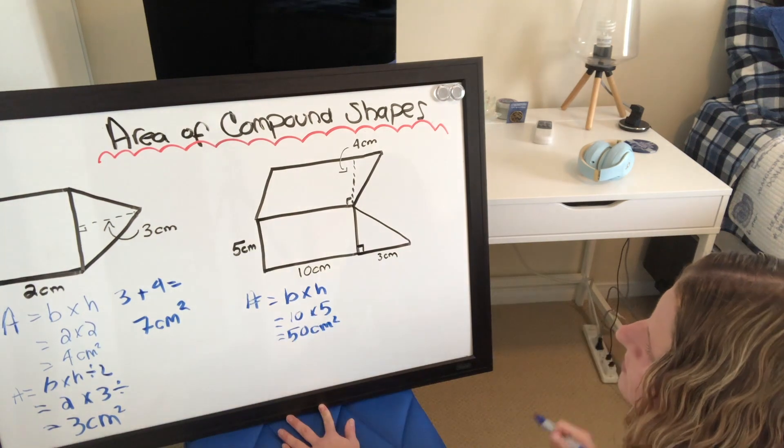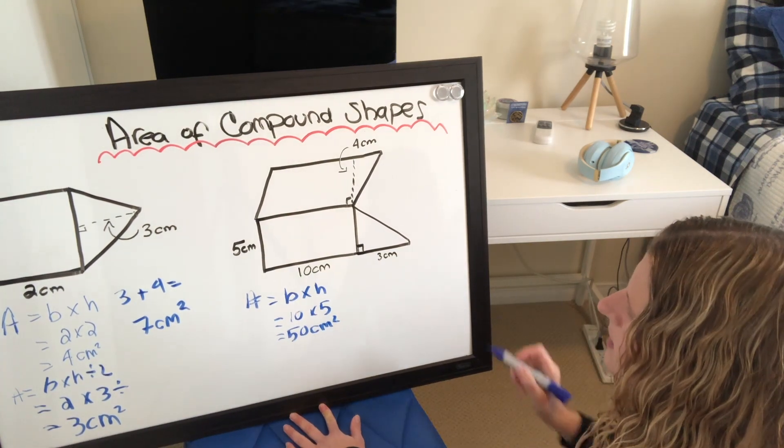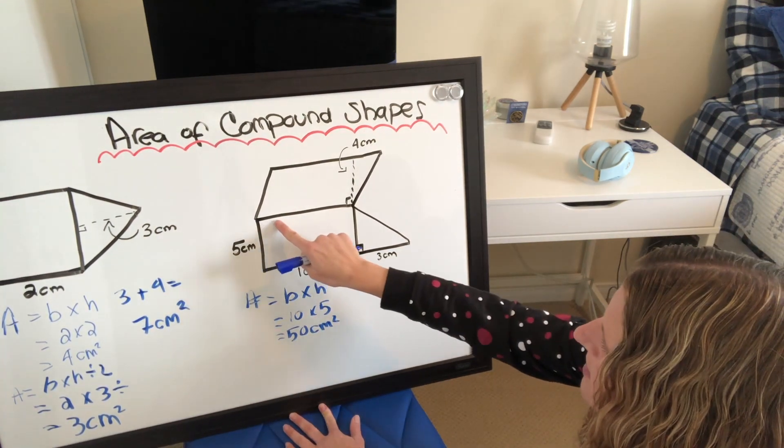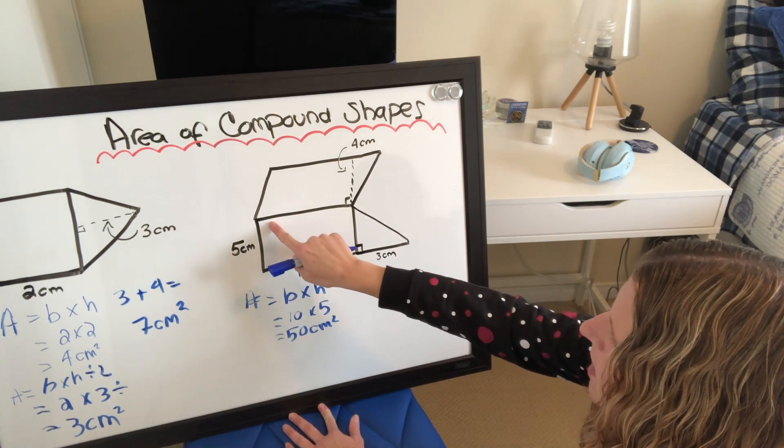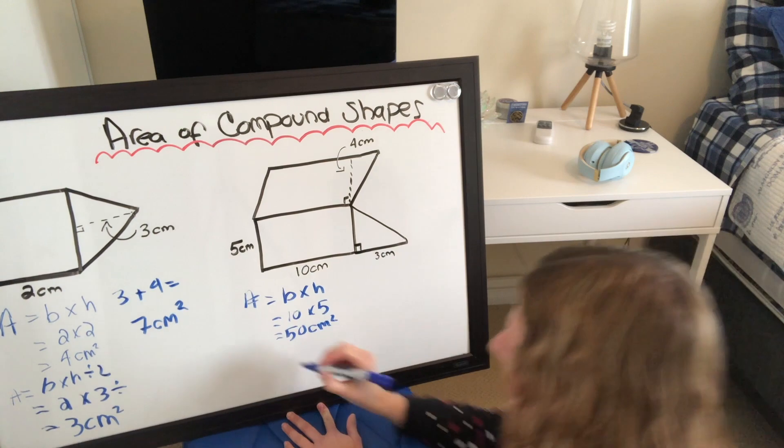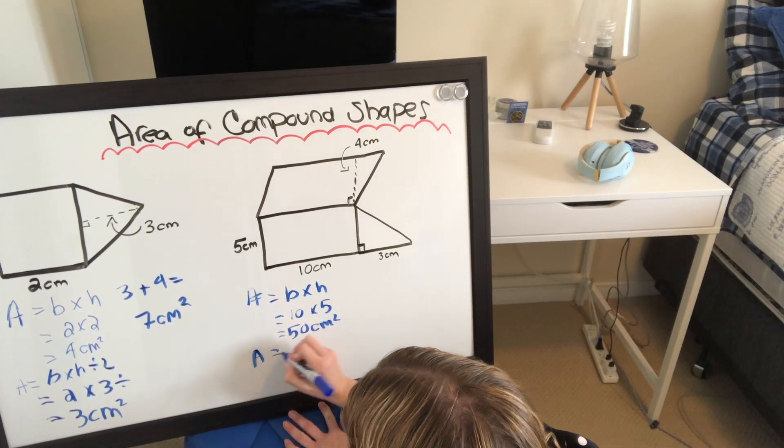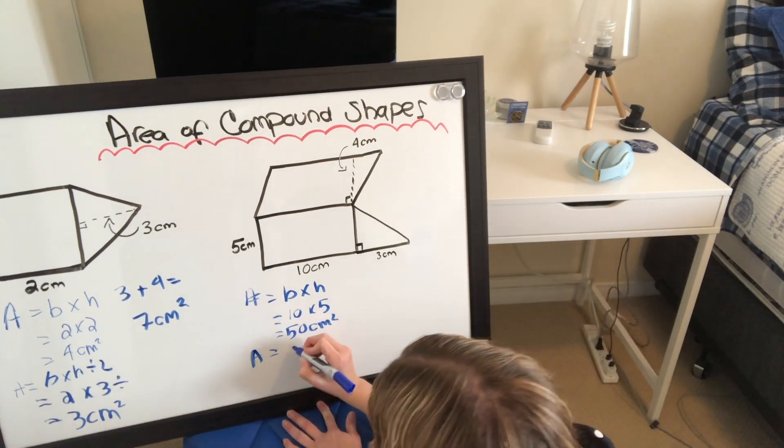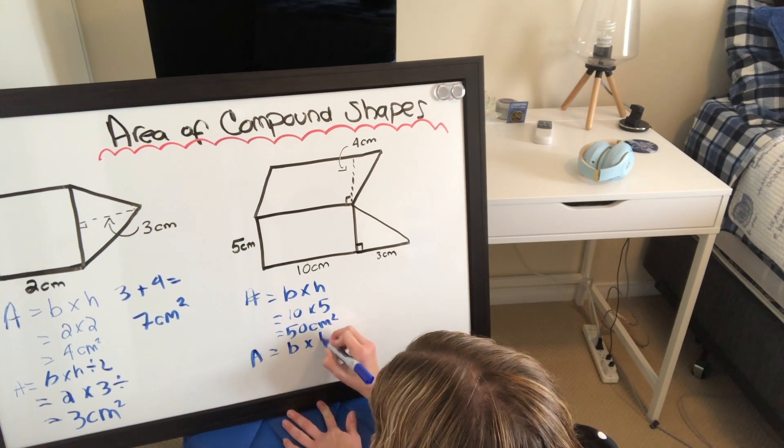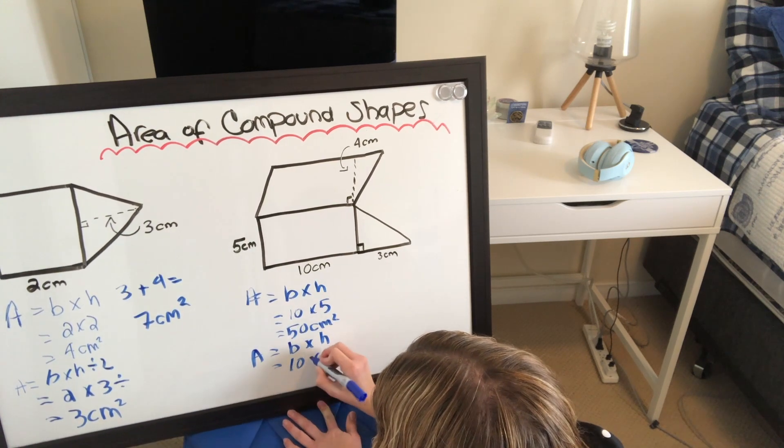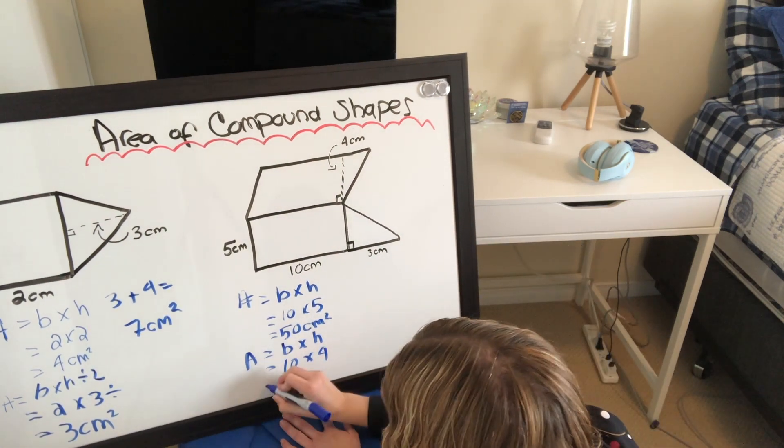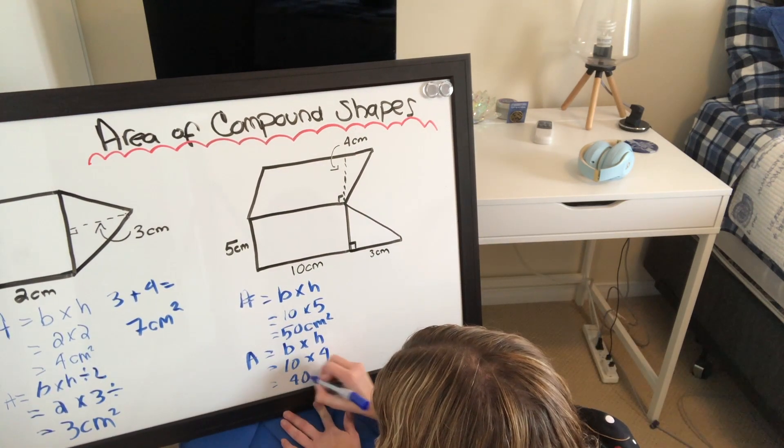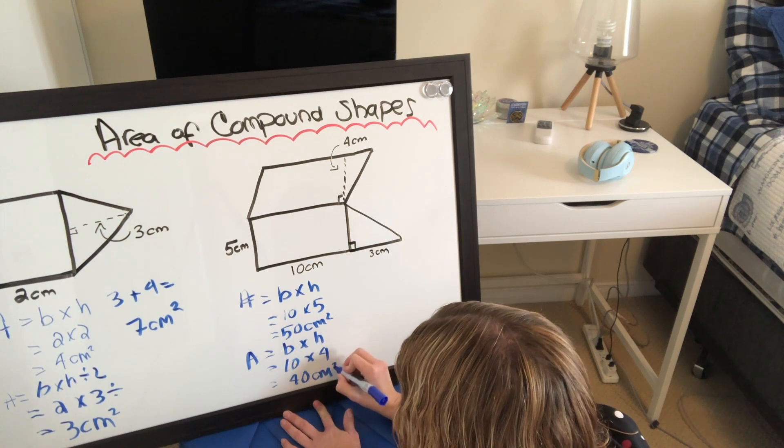Okay, let's do the parallelogram. So I know that the base of the parallelogram is 10 centimeters because it is on the same line as the rectangle. So area equals base times height, which is 10 centimeters times, and the height is right there for 4, which would be 40 centimeters squared.